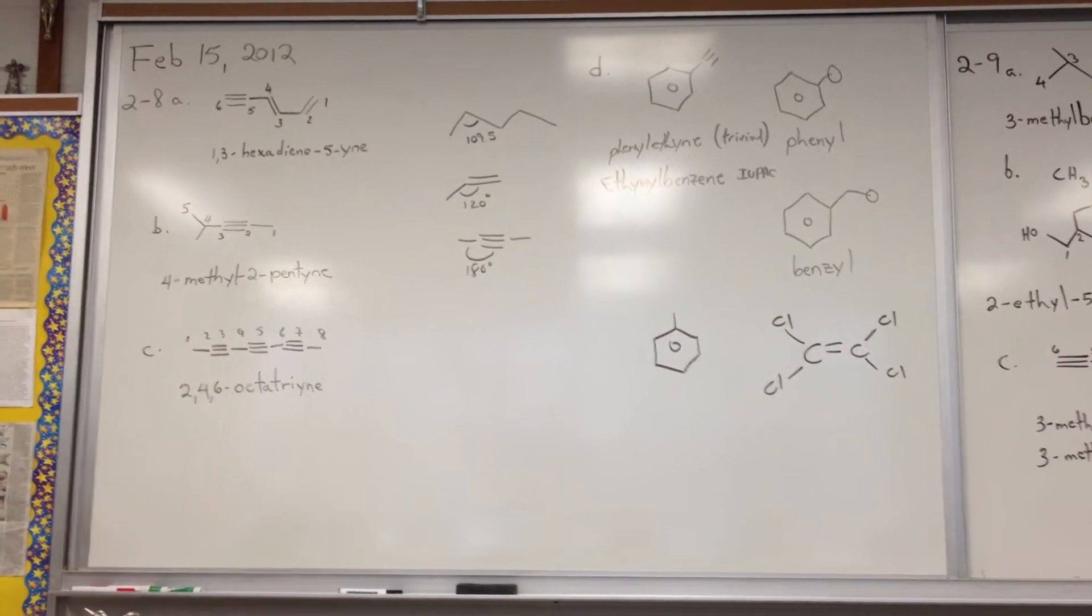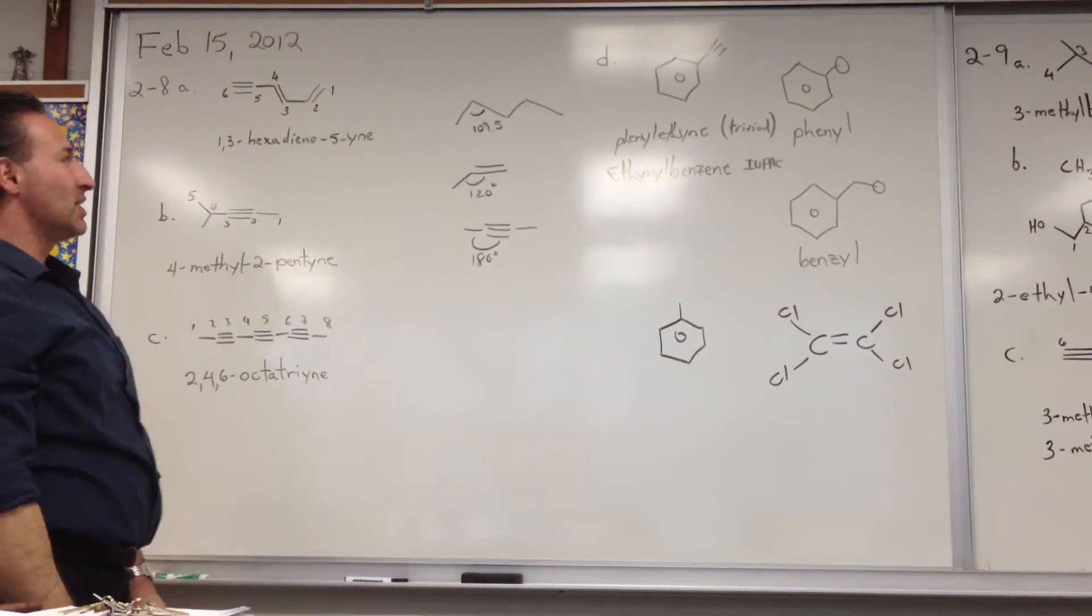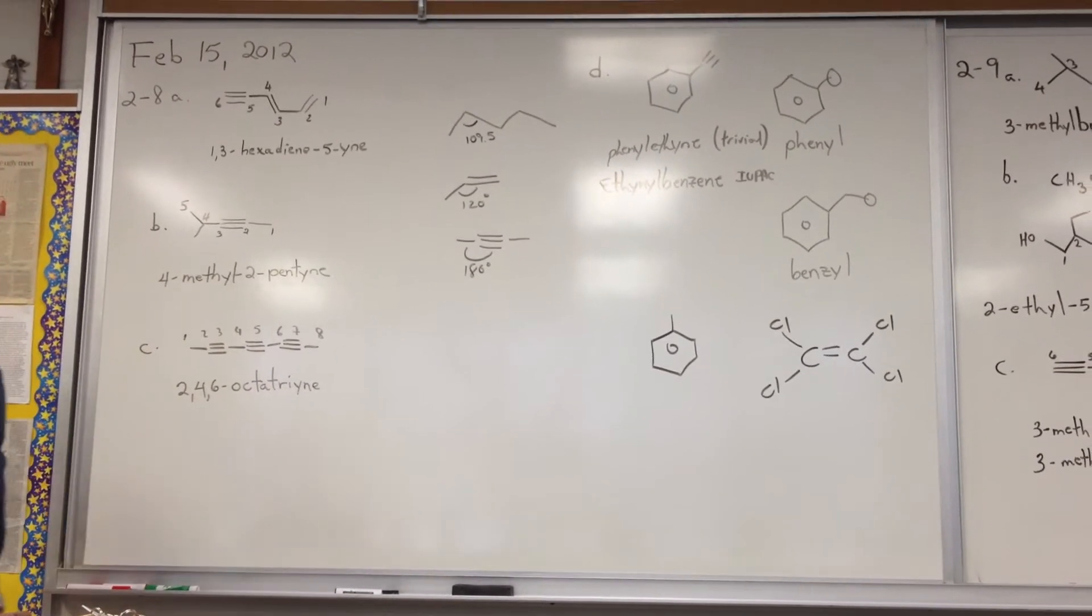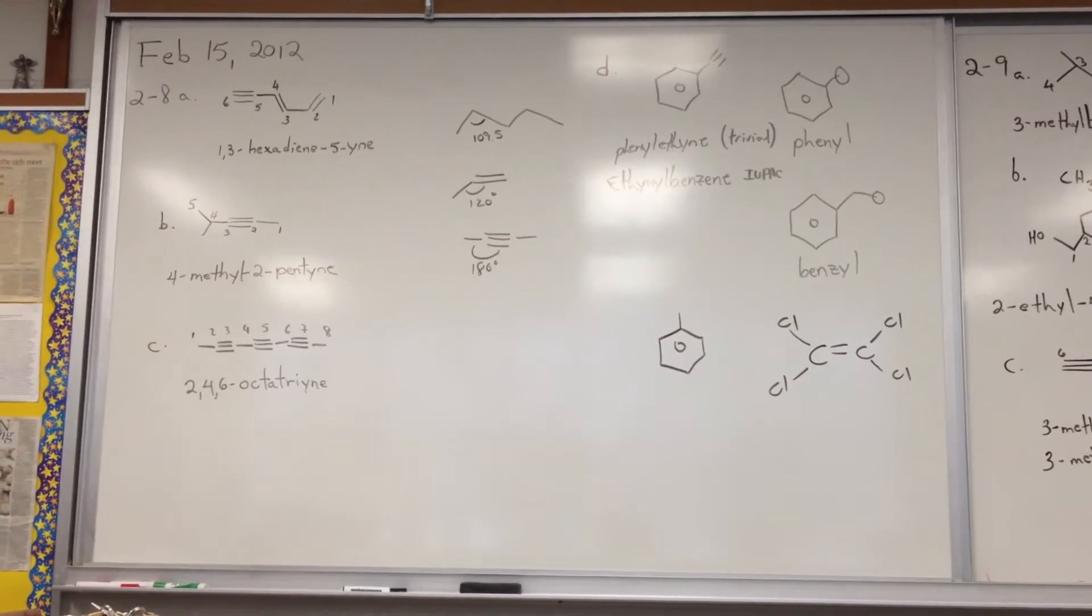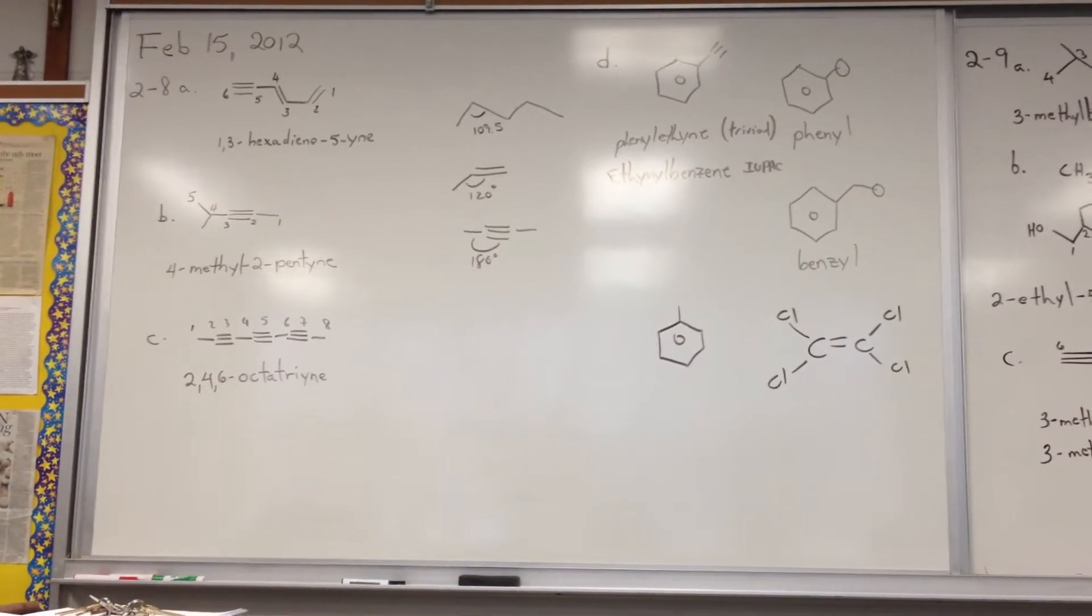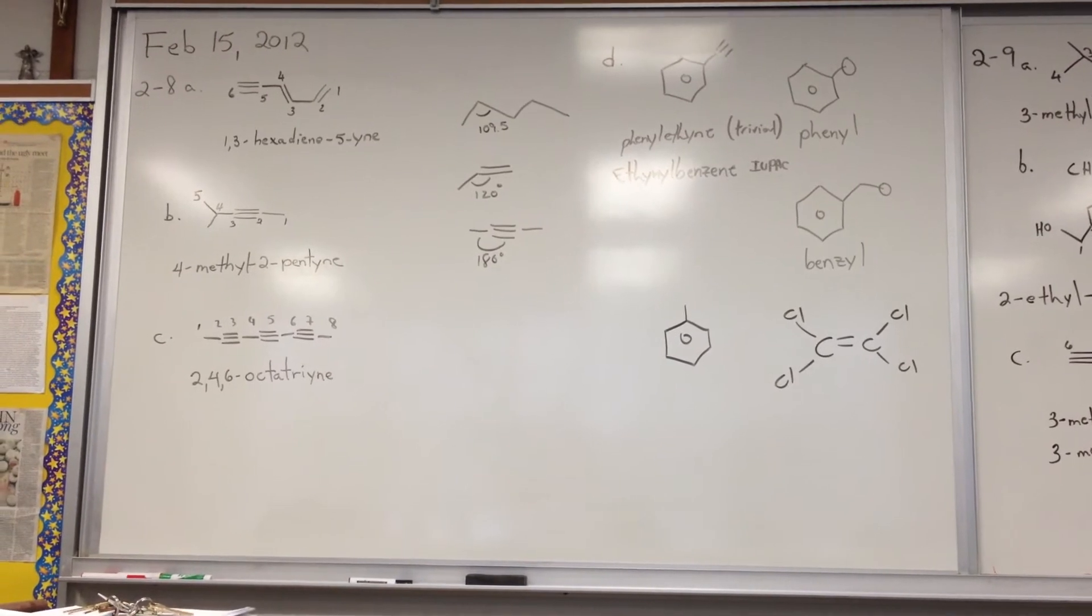So whenever you have an alkyne, the ending is -ine. So you take the root, for example, if you have butane with a triple bond in it at the first position, you would say 1-butyne.